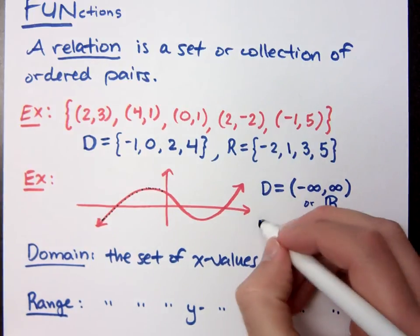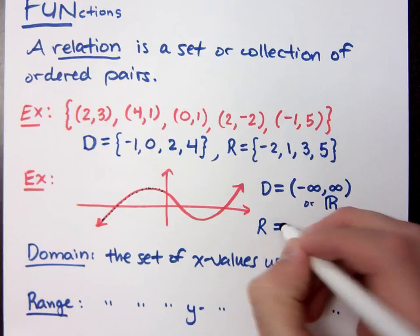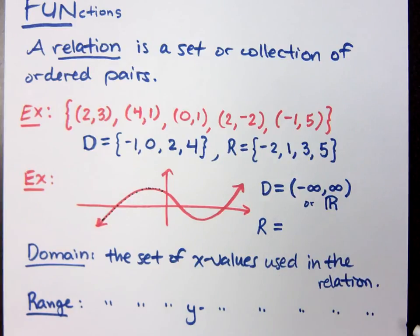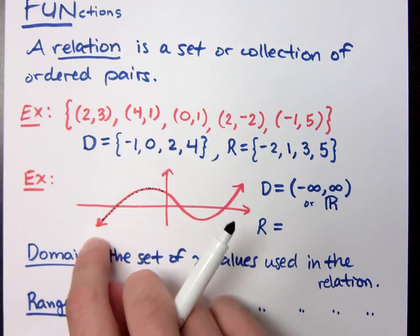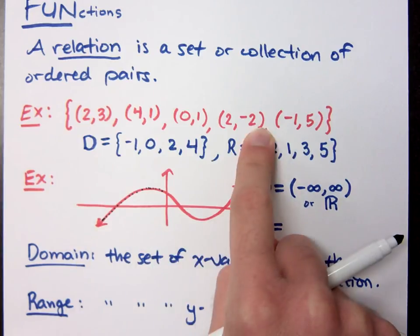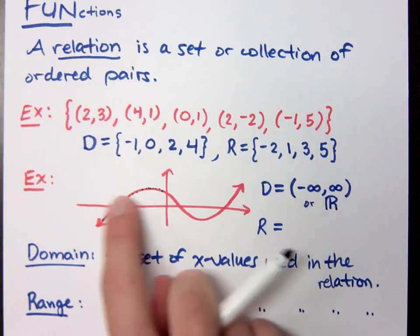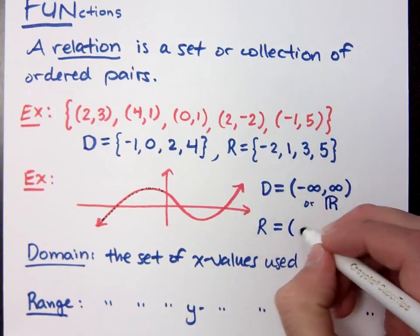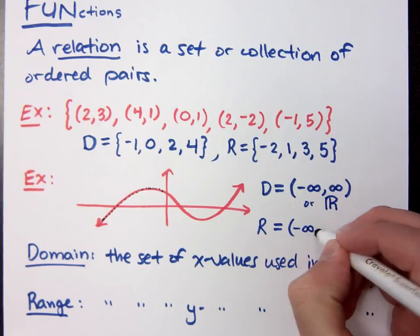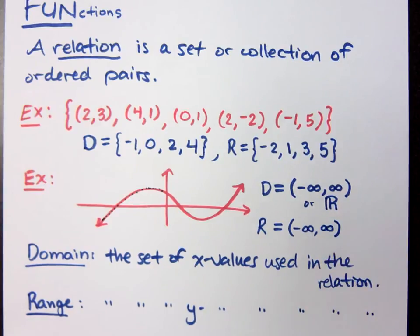What about your range here? Range is the set of y values. So notice this guy goes all the way down. He goes all the way up. So it's going to take every single y value that we can think of to make up this picture. So again, we'll say negative infinity to infinity.